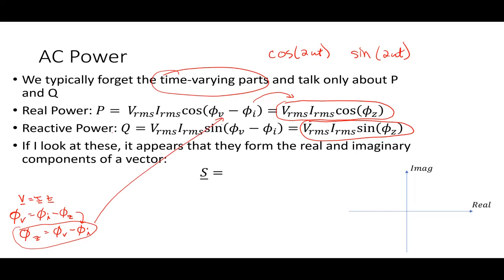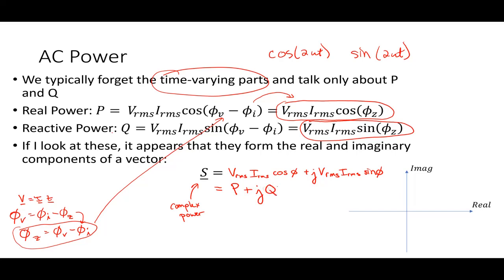If I look at P and Q, using phi sub Z equals phi V minus phi I, I have V RMS I RMS cosine phi Z and V RMS I RMS sine phi sub Z. That sort of looks like the components of a complex number: V RMS I RMS cosine phi plus j V RMS I RMS sine phi. That vector I call S — this is what I call complex power — and it has two components: its real part is P and its imaginary part is Q.